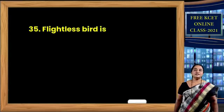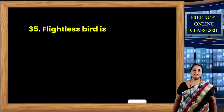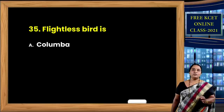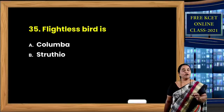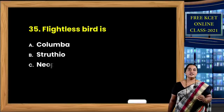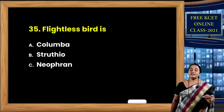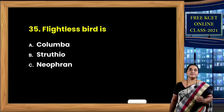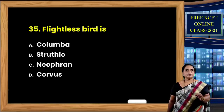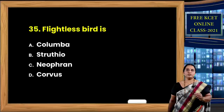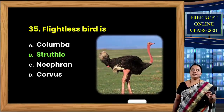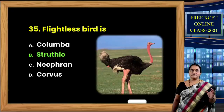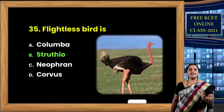The last question: a flightless bird is — options: Columba (pigeon), Struthio (ostrich), Neophron (vulture), Corvus (crow). Out of four options, definitely B — Struthio — the ostrich, which is a flightless bird.